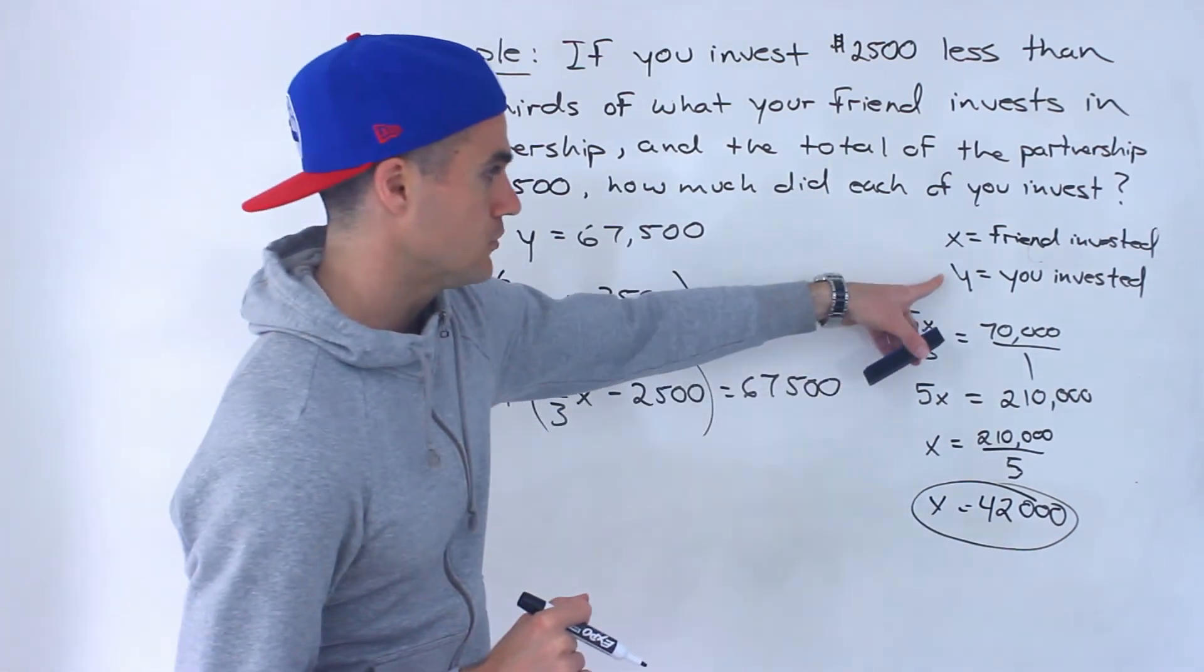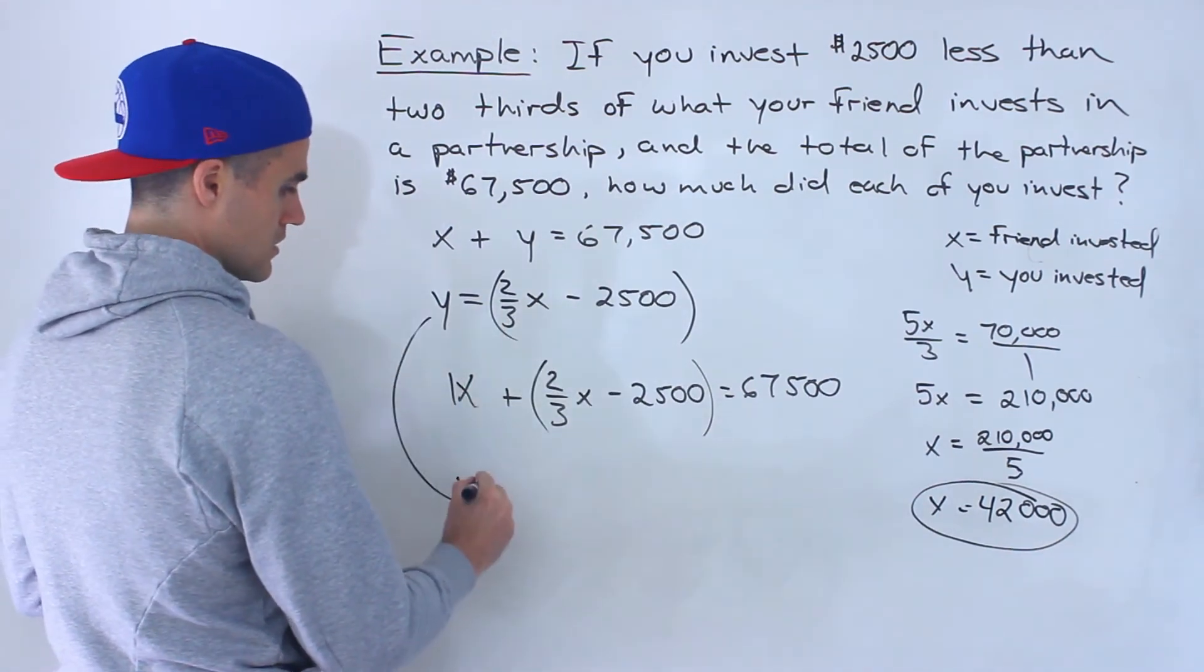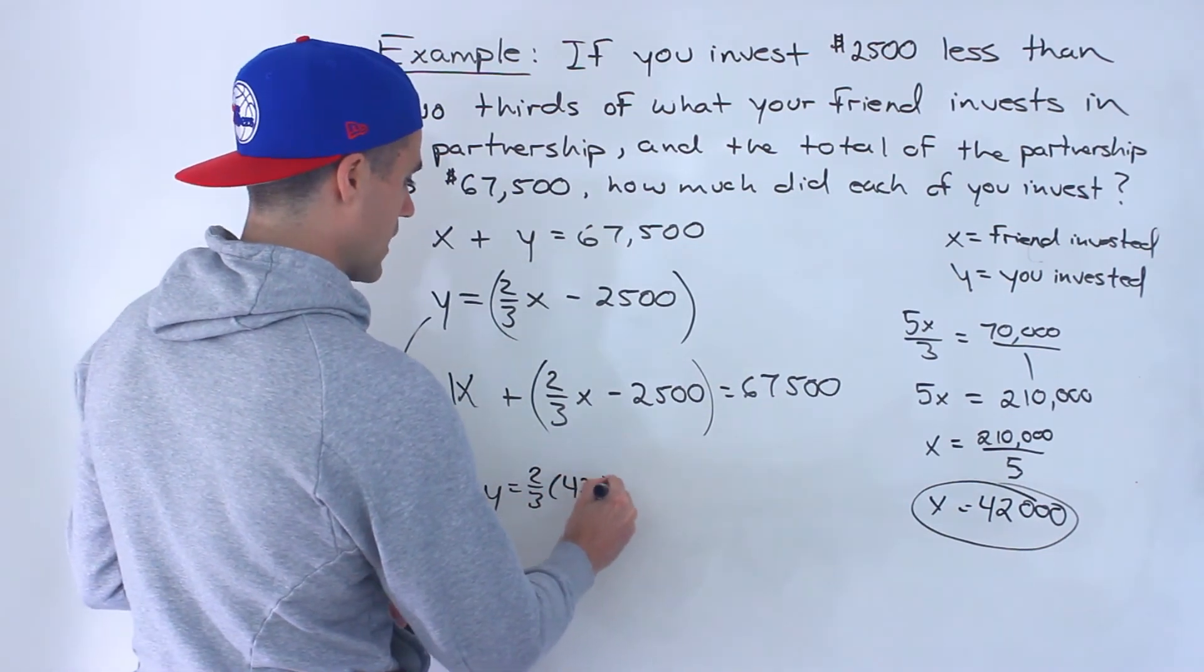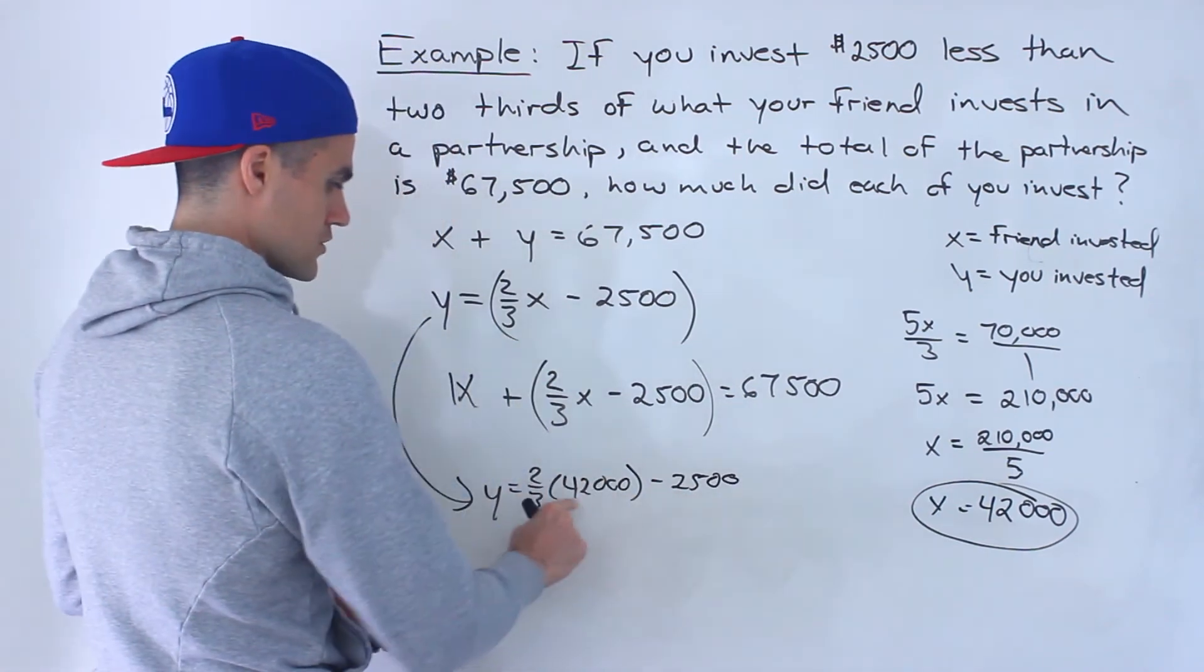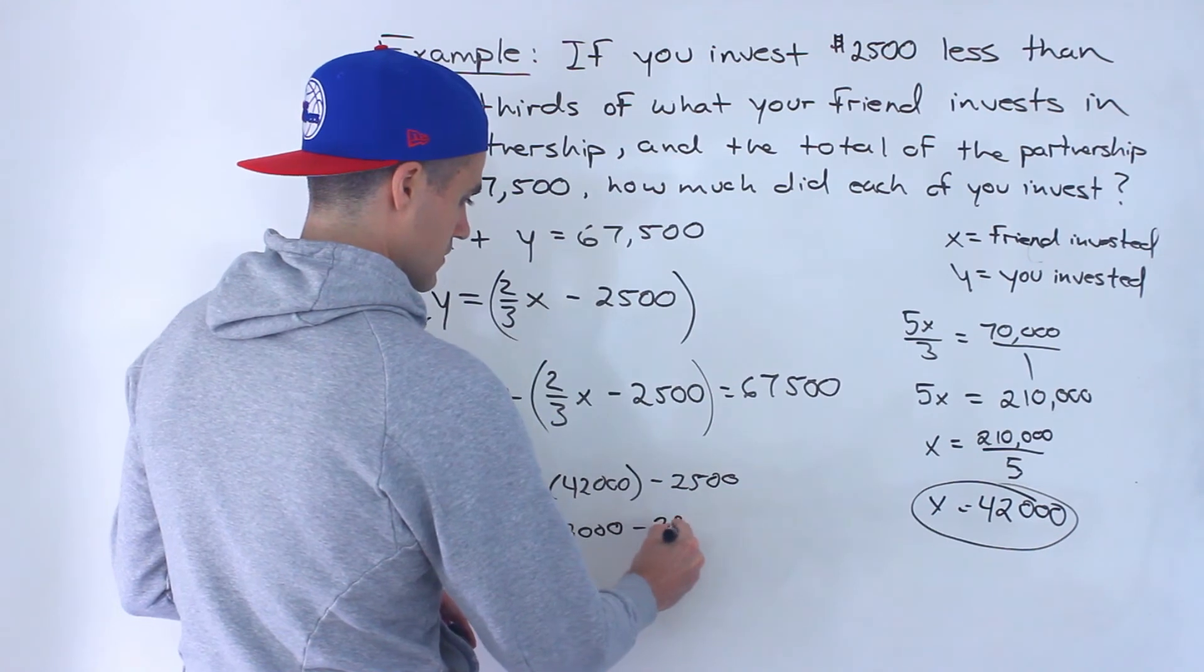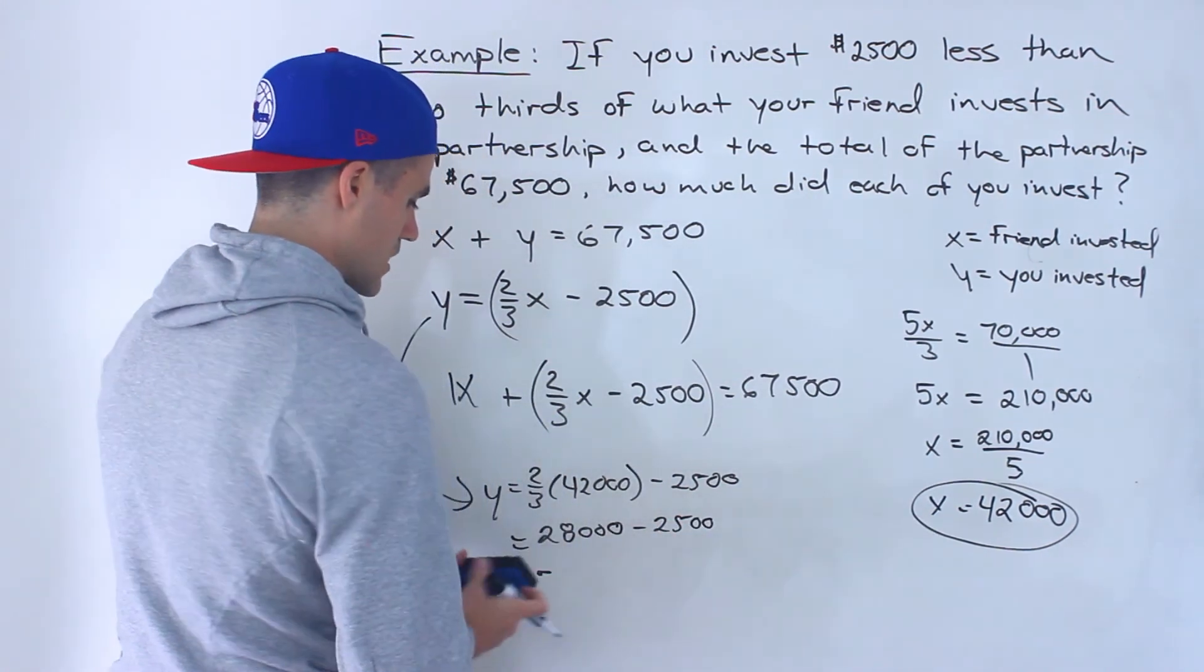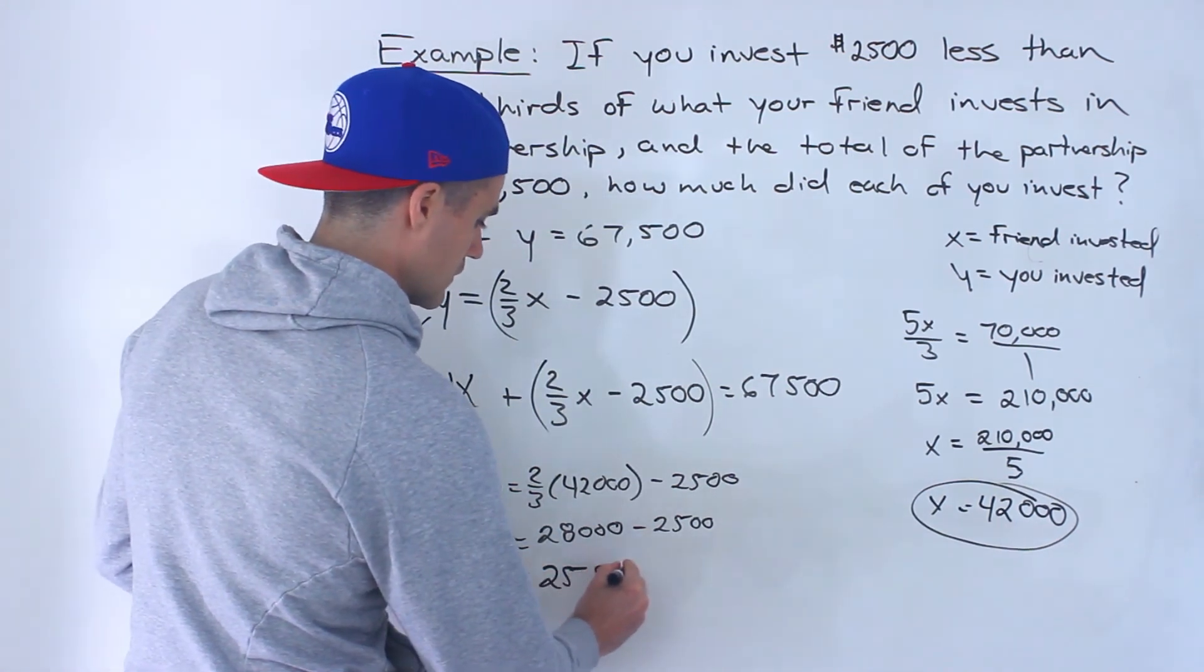And then to get the amount that you invested, just have to solve for y. And notice here, y is already isolated. So what we can do, just plug in 42,000 for x, two-thirds of 42,000 would give us 28,000. And then 28,000 minus 2,500 would give us $25,500.